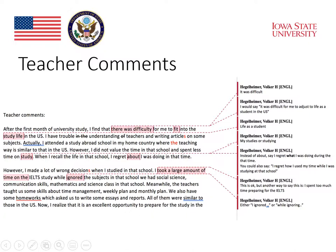If you just look at this first example, the student writes: 'After the first month of university study, I find that there was difficulty for me to fit into the study life in the U.S.' We know what the person wants to say, but I would say something different — I would say: 'It was difficult for me to fit into life as a student in the U.S.' Those are the kinds of feedback that automated systems cannot really provide.